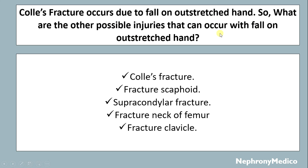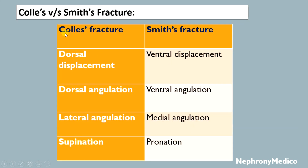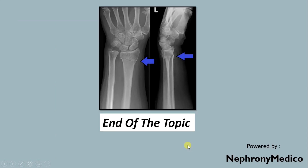Colles' fracture occurs due to a fall on an outstretched hand. Other possible injuries with a fall on an outstretched hand include fracture scaphoid, supracondylar fracture, fracture neck of the femur, and fracture clavicle. Comparing Colles' vs. Smith fracture: in Colles' fracture there is dorsal displacement, dorsal angulation, lateral angulation, and supination; in Smith fracture there is ventral displacement, ventral angulation, medial angulation, and pronation.